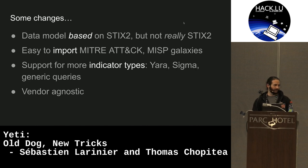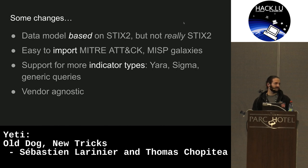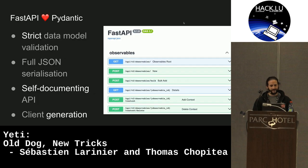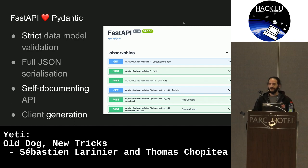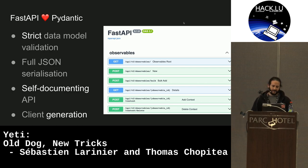This time we want to support more indicator types: Yara, Sigma, and generic queries, while staying vendor agnostic. CSVs aren't the best way to export threat intelligence, but sometimes all you want is a CSV, and that's perfect. FastAPI and Pydantic provide strict data model validation and serialize everything to JSON. The API is self-documenting — this page was generated by the libraries — and it also allows you to generate clients in Python, Golang, TypeScript, and so on, saving us a lot of time and preventing mistakes.